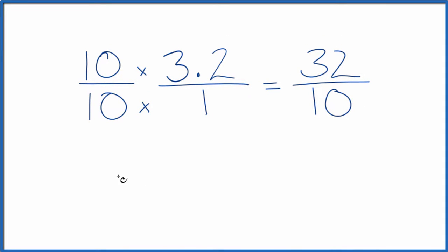32 divided by 2 that equals 16. 10 divided by 2 equals 5. So the decimal 3.2 equals the fraction 16 fifths. This is an improper fraction though so we could convert it to a mixed number.